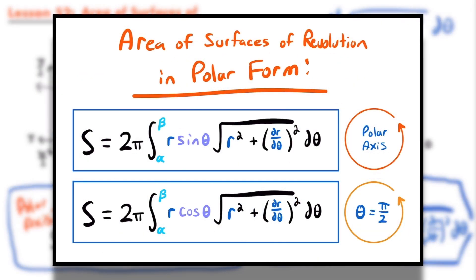To summarize: the area of surfaces of revolution in polar form uses two formulas. When revolving around the polar axis, S = 2π ∫[α to β] r·sin θ · √(r² + (dr/dθ)²) dθ. When revolving around θ = π/2, the formula is the same but with cosine instead of sine: S = 2π ∫[α to β] r·cos θ · √(r² + (dr/dθ)²) dθ. Now let's look at examples.